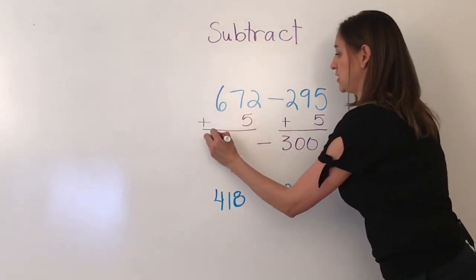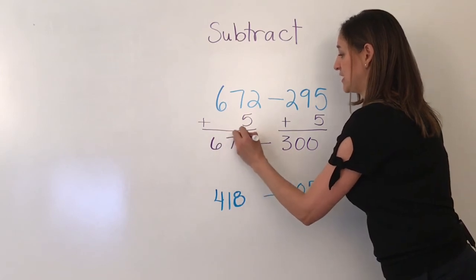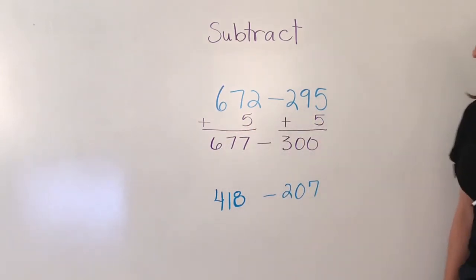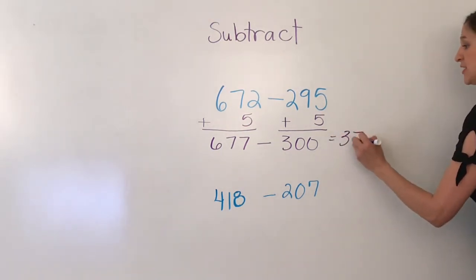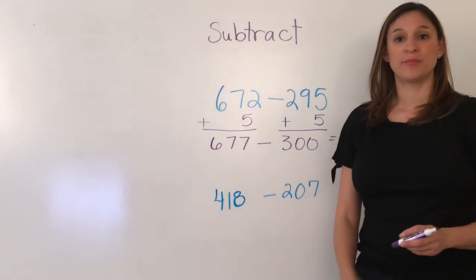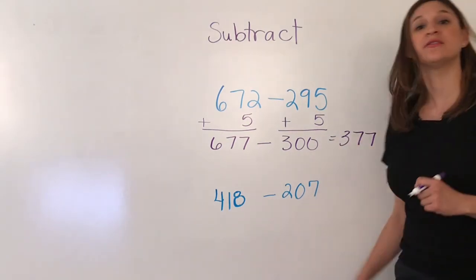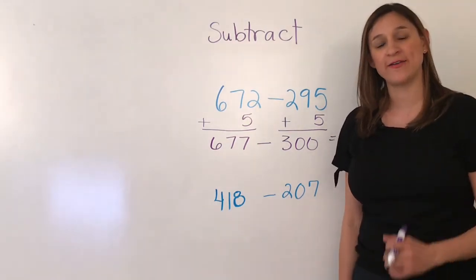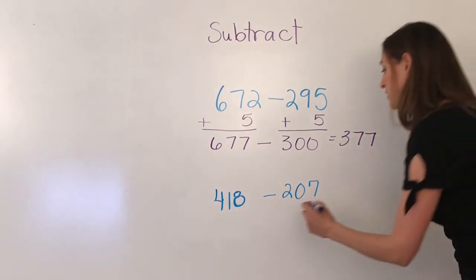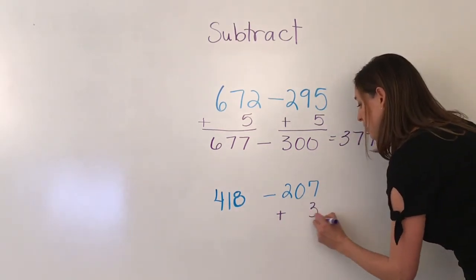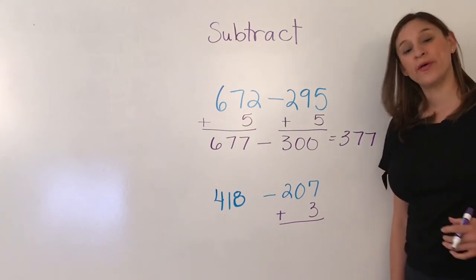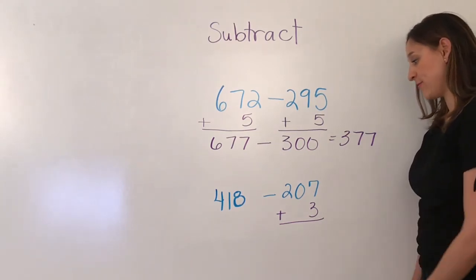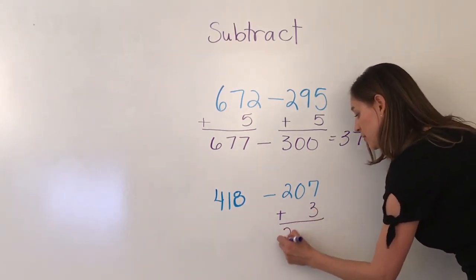Minus 677. 677 minus 300 is 377. And because 7 is greater than 5, I know 7 plus 3 will make this a friendly number.